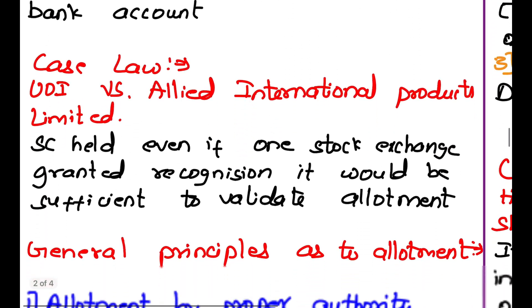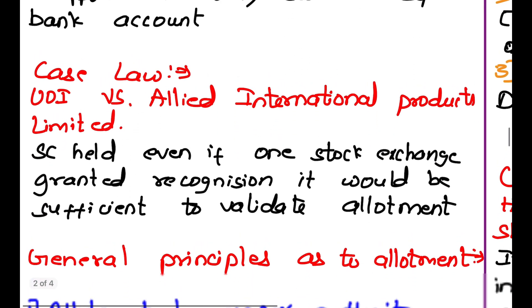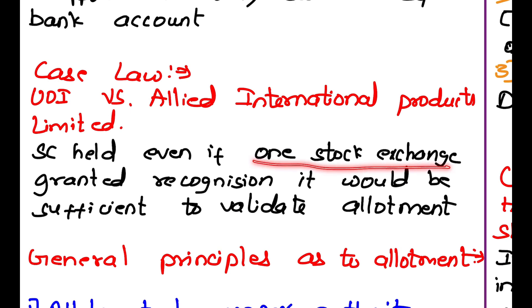Case Law: Union of India vs. Allied International Products Ltd. The Supreme Court held that even if one stock exchange has granted recognition, it would be sufficient to validate the allotment.